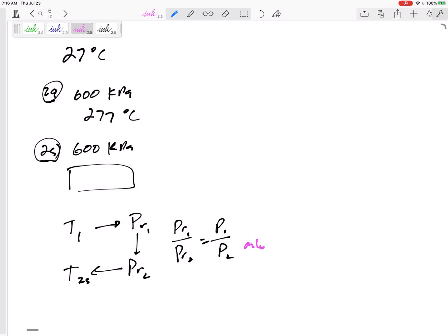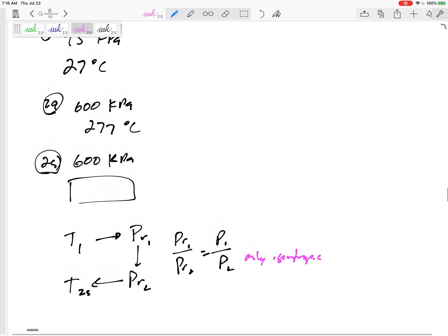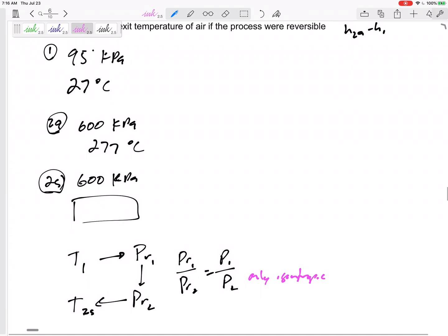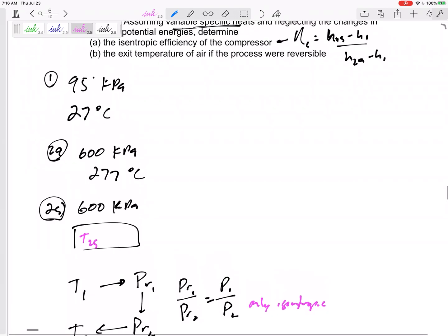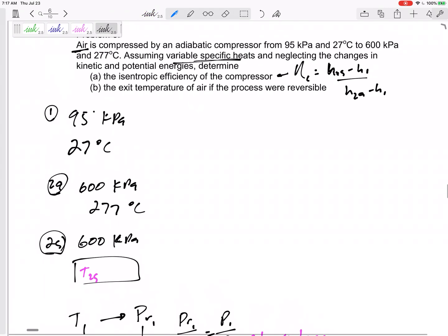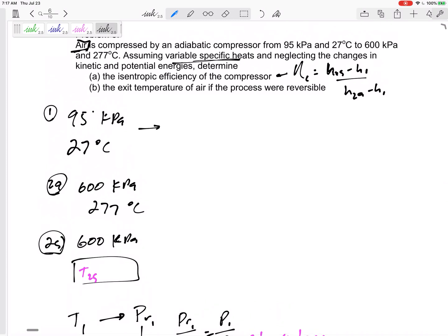Only isentropic. Okay, so that might be how we could get T2S. How do we get the Hs? The Hs for air are just dependent on the temperature. Table A17 for a temperature of 27°C. Some of us might have to interpolate. Maybe it's plus 273, so 300 Kelvin. Maybe it's just right there on the property table for us.